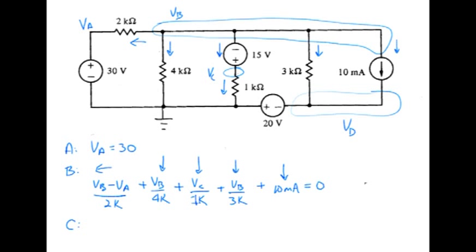Now at node C, there's no reason to write a KCL equation. If you tried to do that, you'd find that you're basically duplicating equation B. But we do need to note that that voltage source gives us a relationship between VB and VC. So we would say that VC is 15 volts higher in potential than node B. So again, this is not a KCL equation, but rather a voltage constraint.